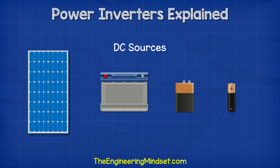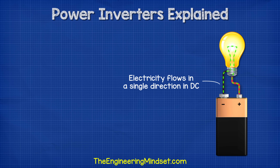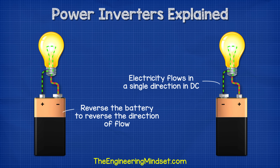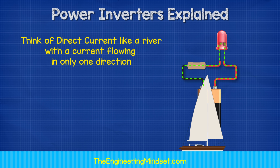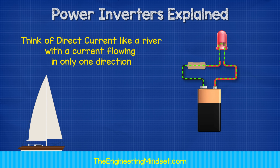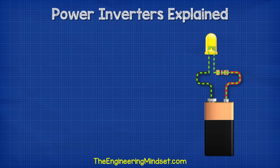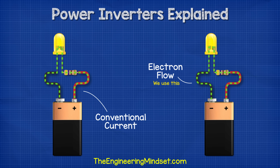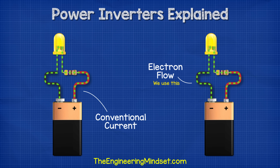The electricity from solar panels and batteries is known as DC electricity, because this type of electricity flows in just one single direction — it flows from one terminal directly to the other. If we reverse the battery, the electrons flow in the opposite direction. You can think of DC electricity like a river with the current of water flowing in just a single direction. In these animations I use electron flow, which is from negative to positive, but you might be used to seeing conventional current, which is from positive to negative. Electron flow is what's actually occurring; conventional current was the original theory and is still widely taught today.